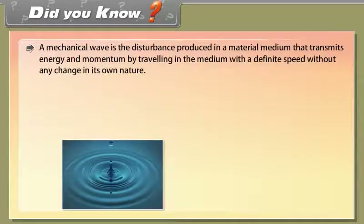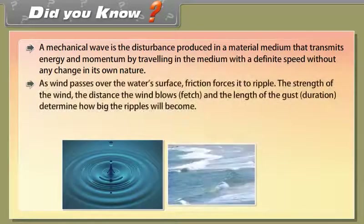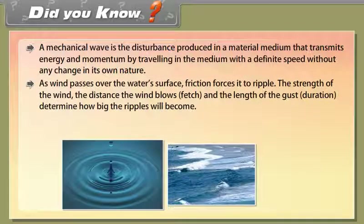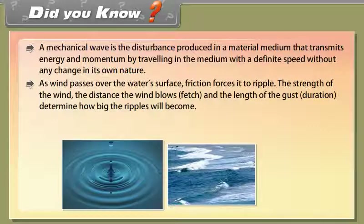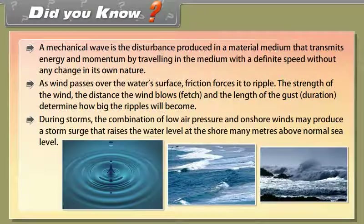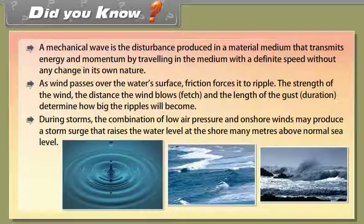Did you know? A mechanical wave is the disturbance produced in a material medium that transmits energy and momentum by traveling in the medium with a definite speed, without any change in its own nature. As wind passes over the water surface, friction causes ripples. The strength of the wind, the fetch (distance the wind blows), and the duration determine how big the ripples become. During storms, the combination of low air pressure and onshore winds may produce a storm surge that raises the water level at the shore many meters above normal sea level.